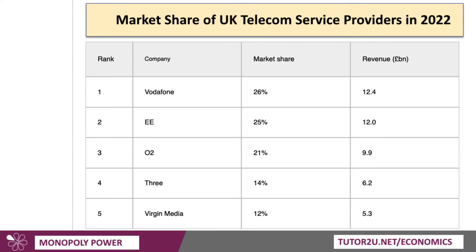Here's a good example of a market which is essentially oligopolistic — a market dominated by five big players: UK telecom service providers, the likes of Vodafone, EE, O2, 3, and Virgin Media. This was their market share in 2022 according to Ofcom data.